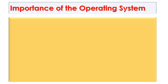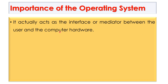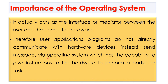What is the importance of the operating system? The OS — sometimes abbreviated as OS — acts as the interface or mediator between the user and the computer hardware. User application programs do not directly communicate with hardware devices; instead, they send messages via the operating system, which has the capability to give instructions to the hardware to perform a particular task.